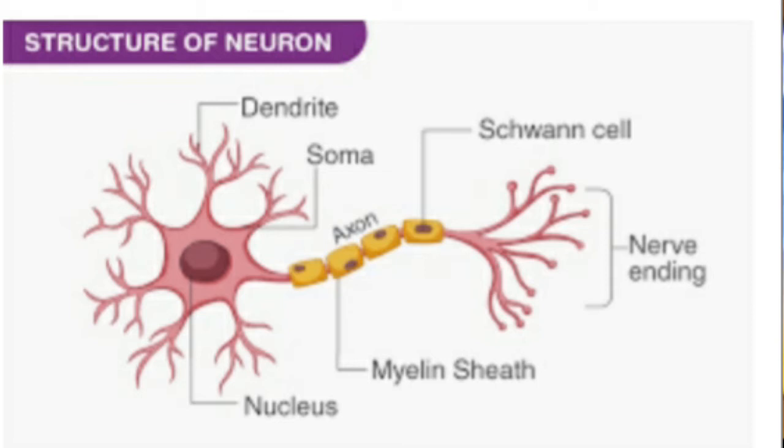A distinct nucleus is also present in the cytone. Dendrites are the highly branched small projections arising from the cytone. They are one to many in number. They conduct impulses towards the cytone, hence called afferent processes.